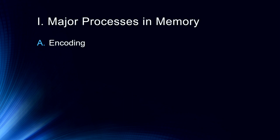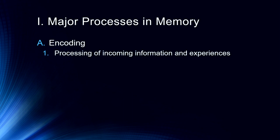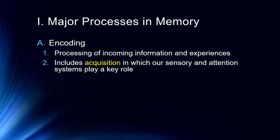Let's first address the major processes of memory. The first of these is what we call encoding. This is how we process incoming information and experiences — how your brain takes today and turns it into a memory, how it takes what you studied for an exam and turns it into a memory. This includes acquisition, and this is where our sensory attention and executive functioning systems play a key role as we start to acquire information.